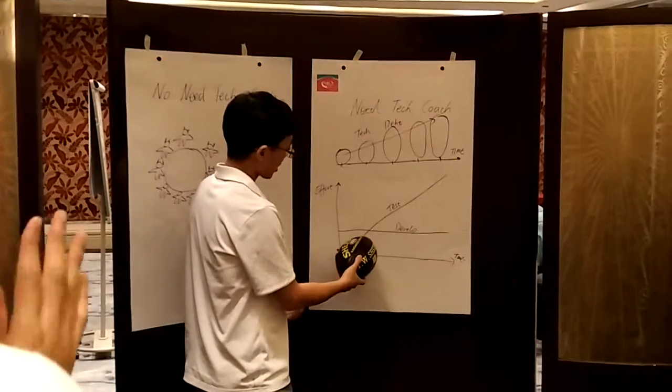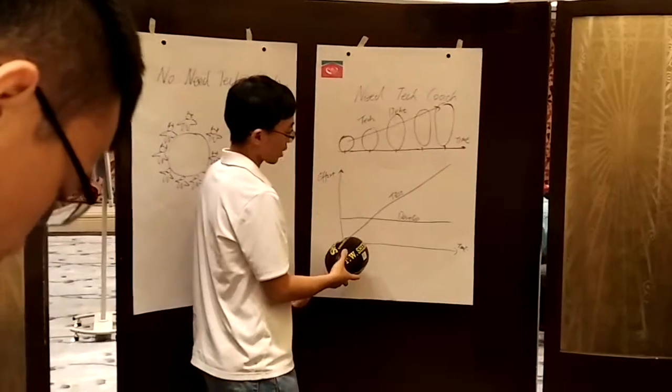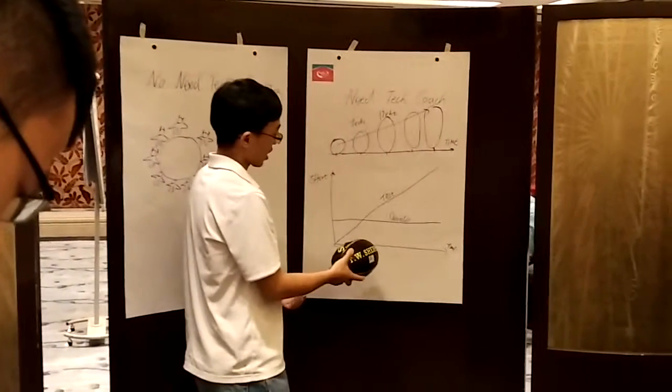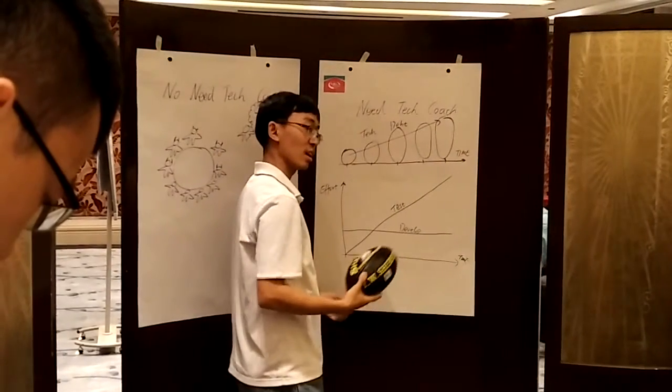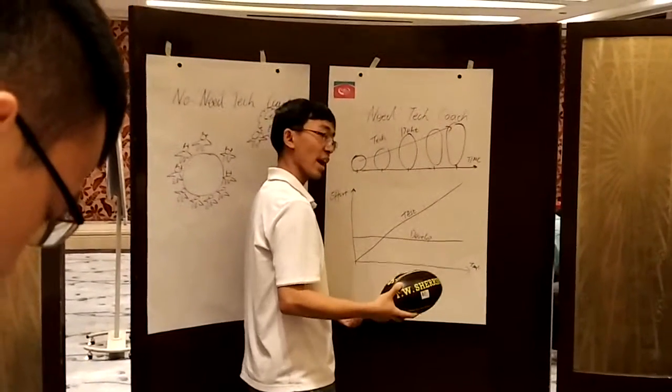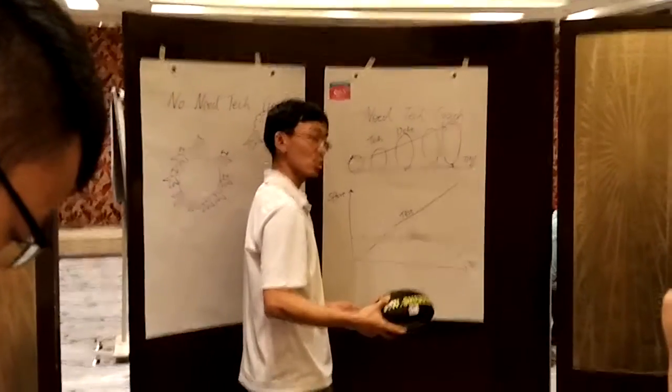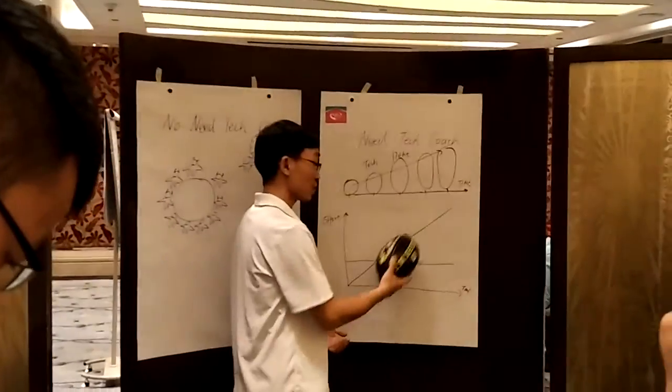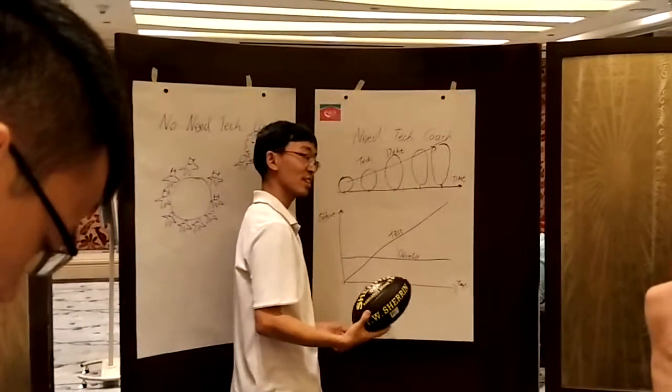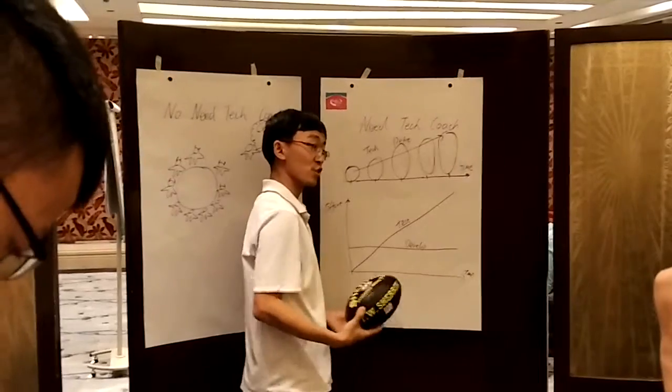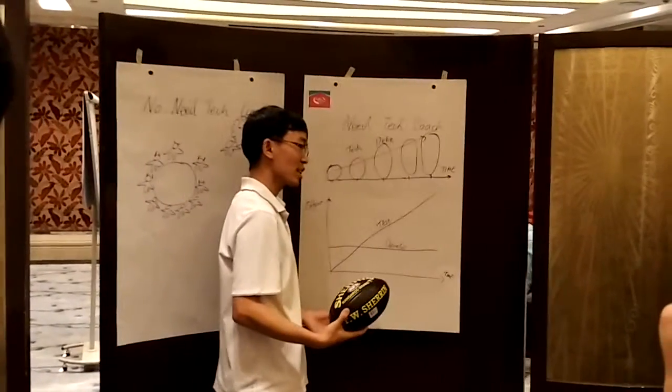The third one is, since the product is growing, the developer team is always developing at a certain speed to deliver features. But the testing team is exhausted from testing more and more features, more and more regression. Maybe it's manual.